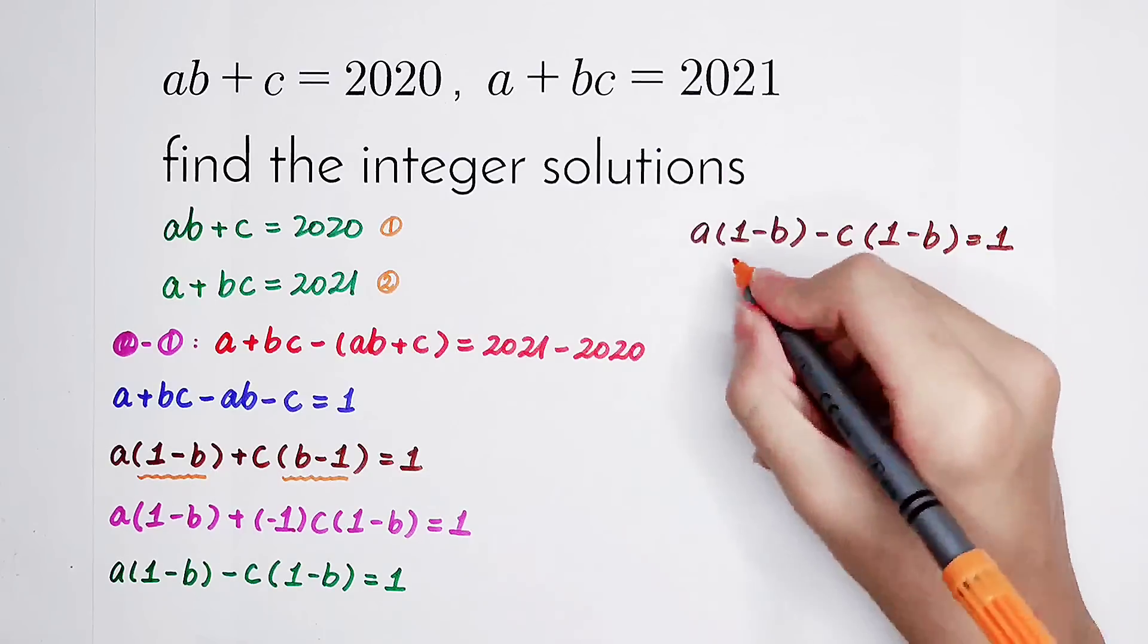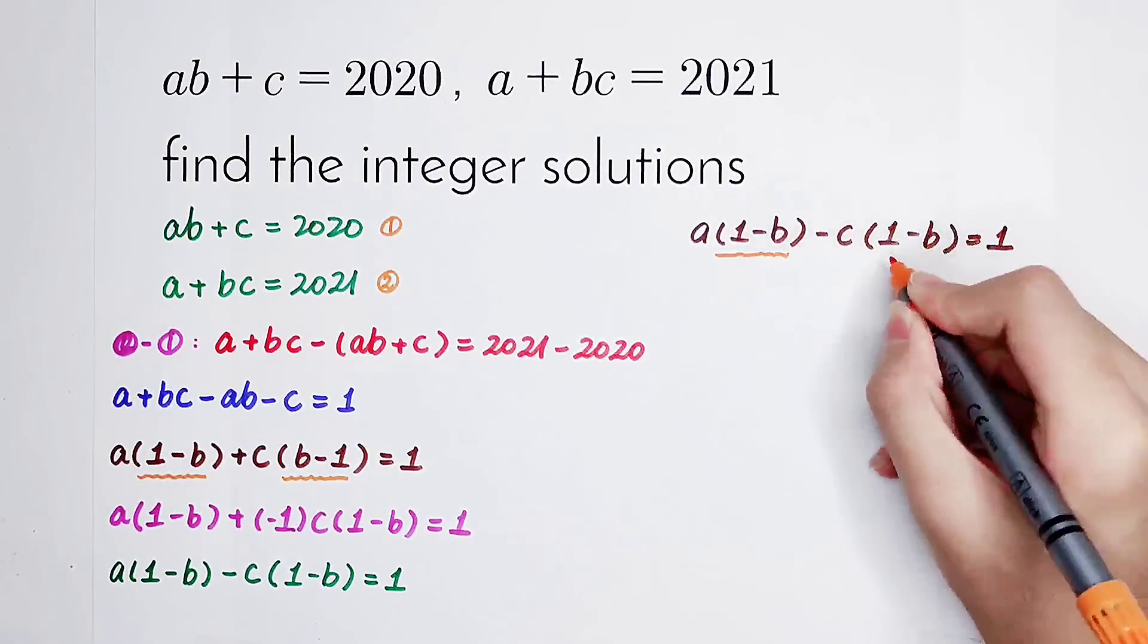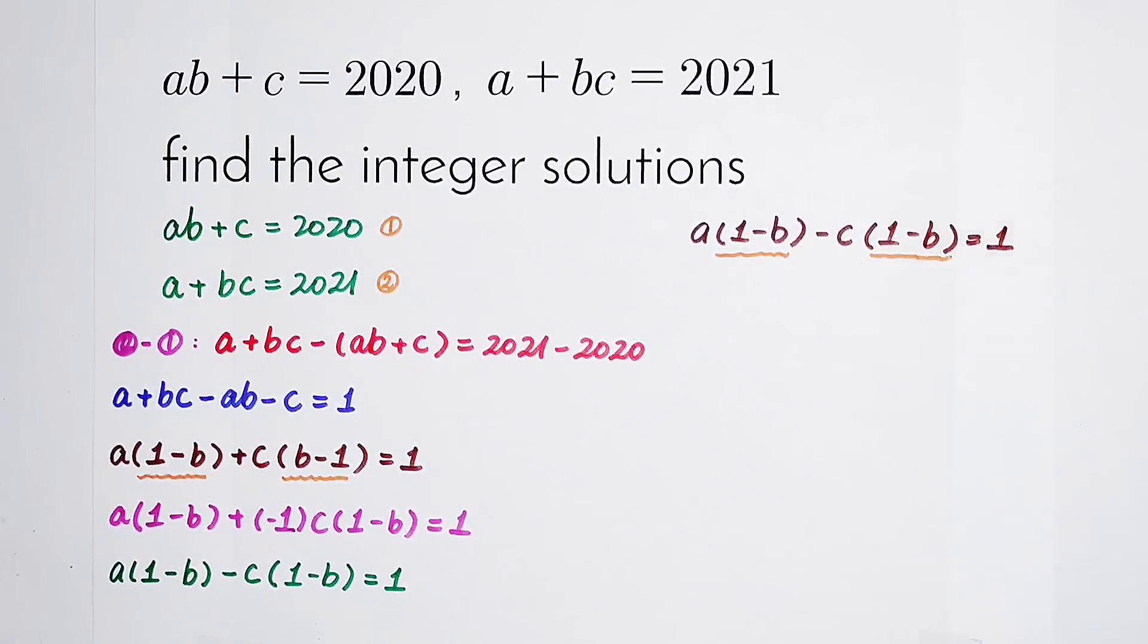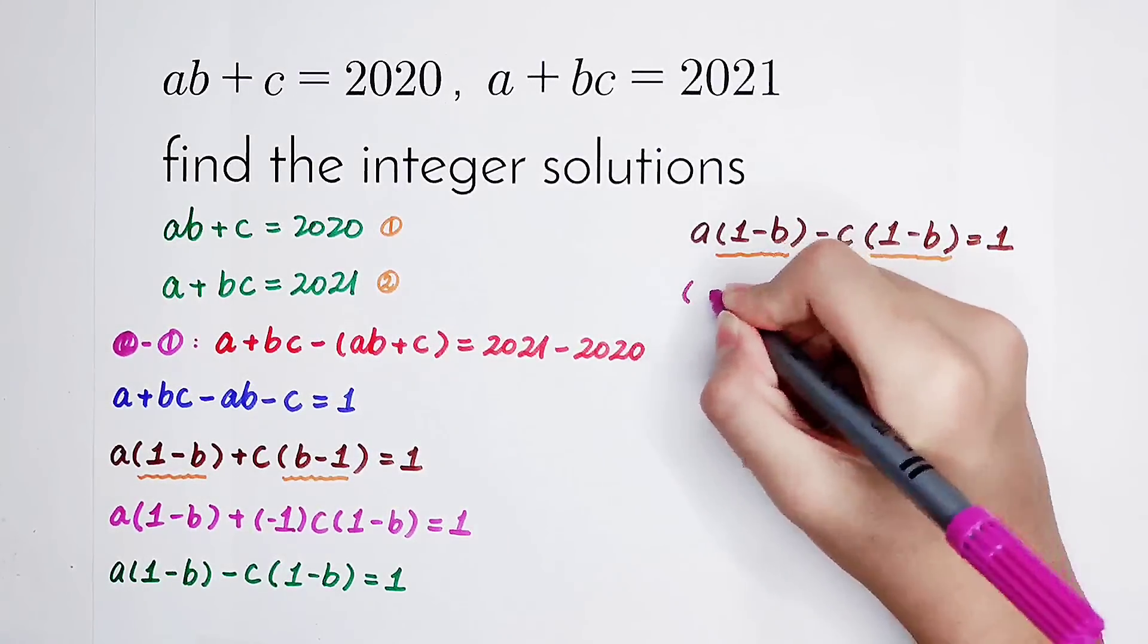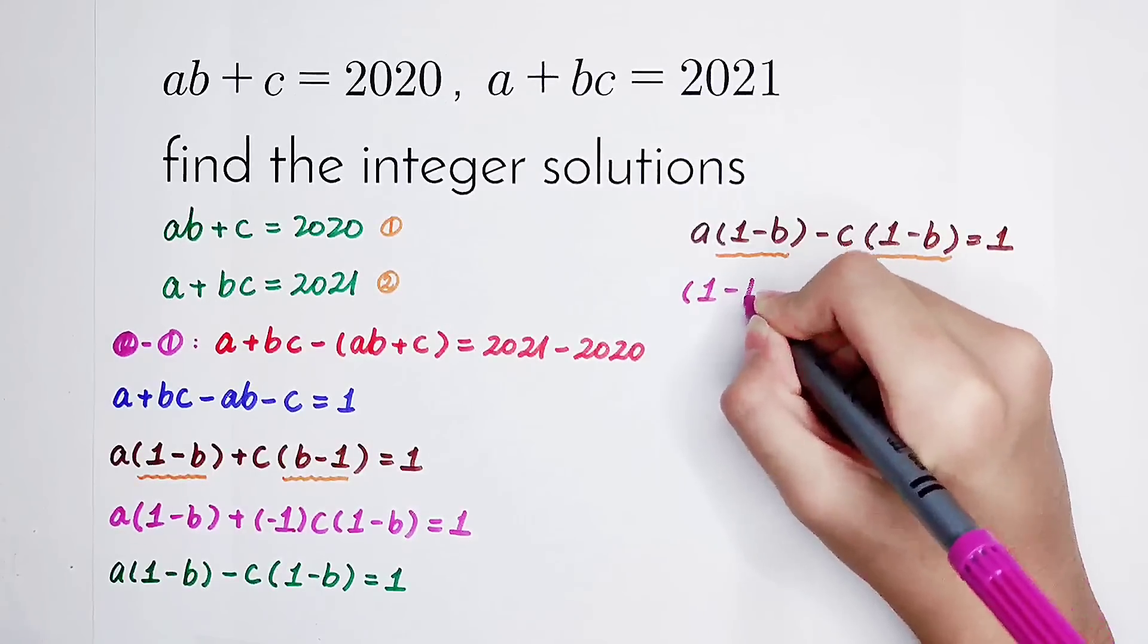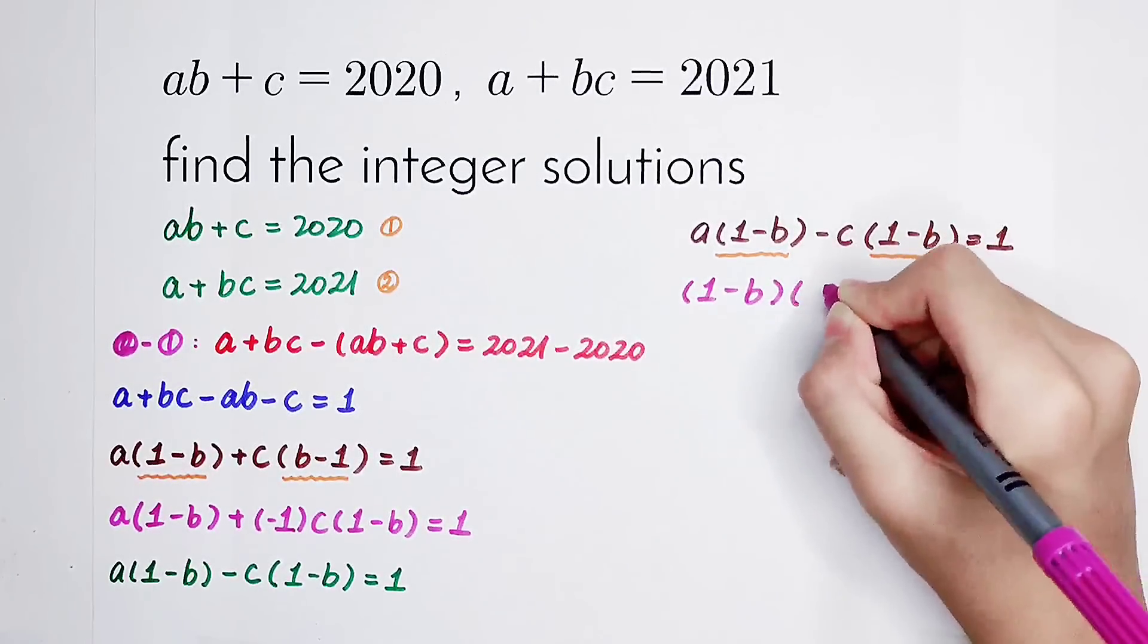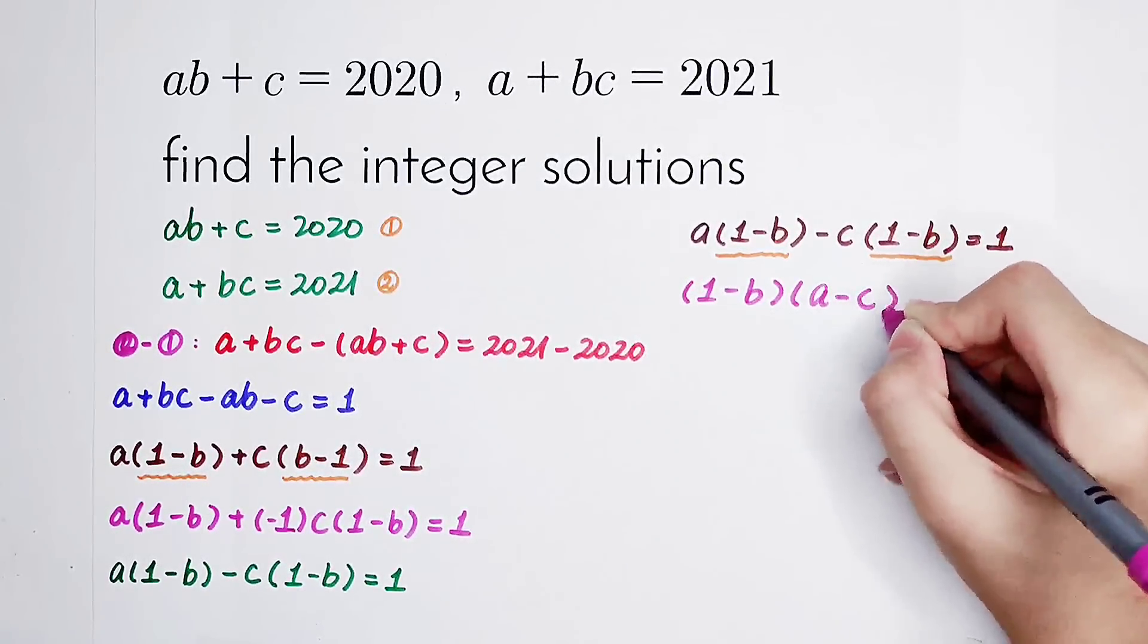So we have to find the integer solution. Pay attention. Because here appears 1 minus B and here again. So we can take out a 1 minus B and then what's in the bracket? 1 minus B times A minus C. Very good.